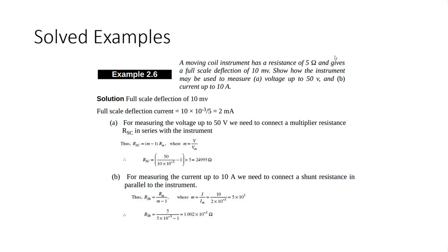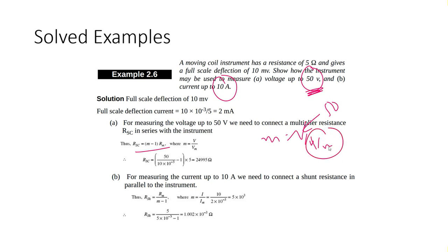Now we want to convert a galvanometer into two things: a voltmeter that can measure 50 volts and an ammeter that can measure 10 amperes. For the voltmeter, the formula is Rsc = (m minus 1) times Rm, where m = V/Vm = 50 divided by 10 millivolts. Rm is also given.